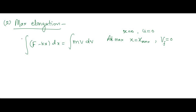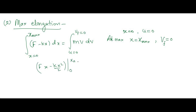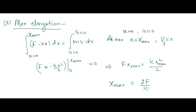Using those limits, the right-hand side integrates to [F·x − k·x²/2] from 0 to x_max, and the left-hand side equals zero since both velocities are zero. This gives F·x_max = k·x²_max/2, so x_max = 2F/k. The maximum elongation in the spring is 2F/k.